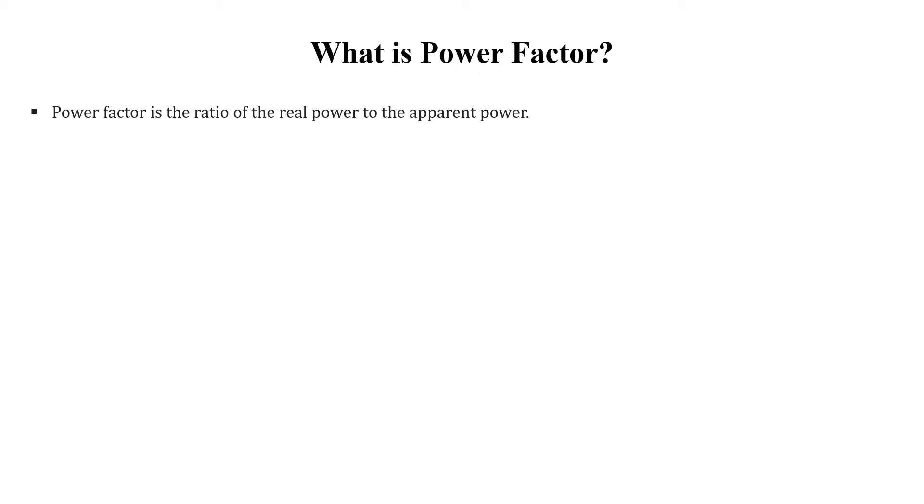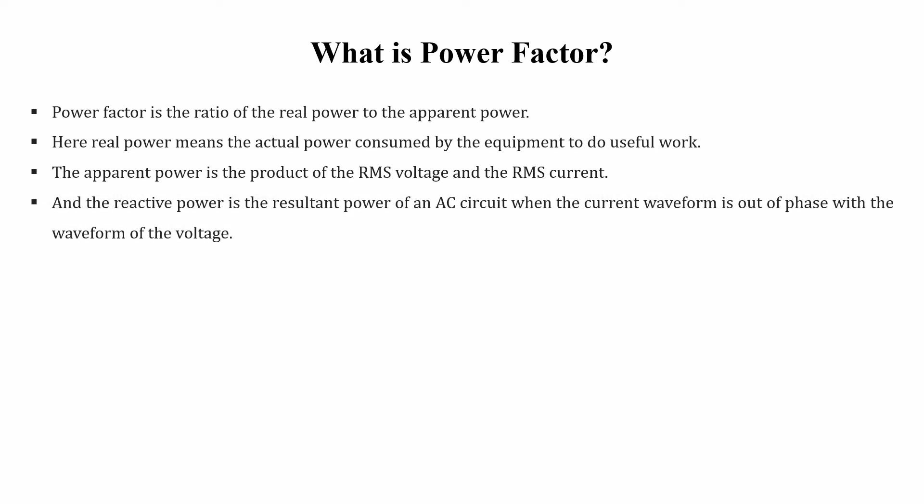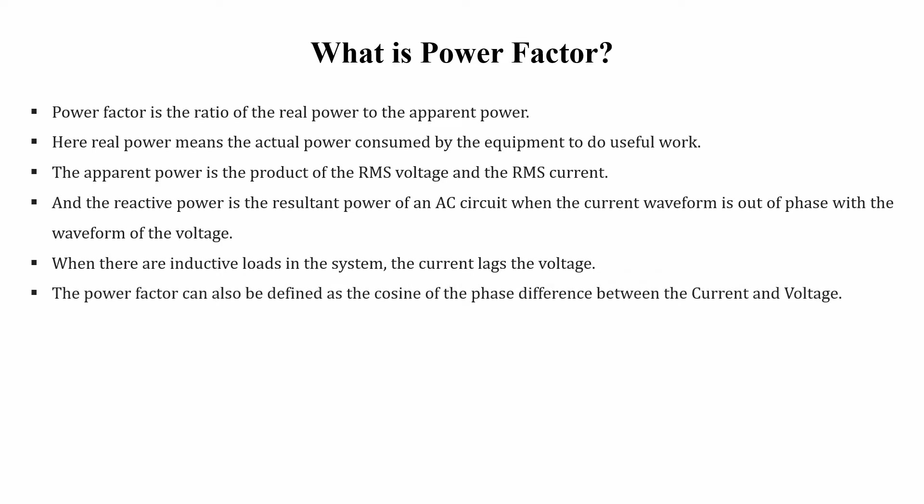Before showing the simulation, let me give you an idea of what a power factor is and how it can be improved. The power factor of an AC electrical system is defined as the ratio of the real power absorbed by the load to the apparent power flowing in the circuit. Real power is the actual power consumed by equipment to do useful work. Apparent power is the product of RMS voltage and RMS current. Reactive power is the resultant power of an AC circuit when the current waveform is out of phase with the voltage waveform. When there are inductive loads in the system, the current lags the voltage.